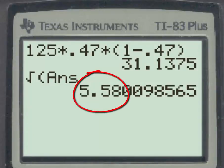And that's how you can easily use the TI-83 to find both the mean and standard deviation for a binomial distribution.